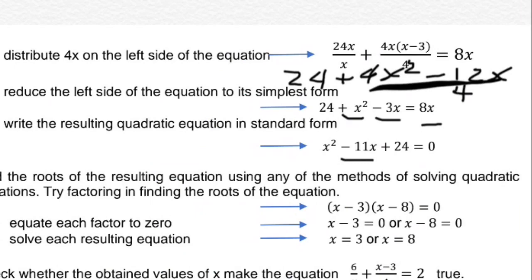By factoring: the quantity of x minus 3 times the quantity of x minus 8 equals 0. Applying zero product property: x minus 3 equals 0 or x minus 8 equals 0. So x equals 3 and x equals 8. Check if the given values of x make the equation true. If the obtained values of x make the equation true, then the solutions are x equals 3 or x equals 8.